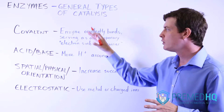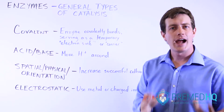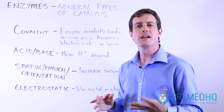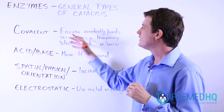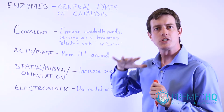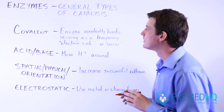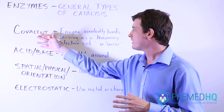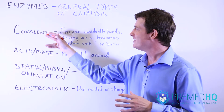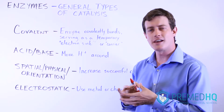We'll go through these four different types and talk about how they facilitate a reaction occurring and what is the way in which they lower the activation energy barrier to that reaction taking place. With a covalent catalyst, the mechanism is generally in the name — it forms covalent bonds.